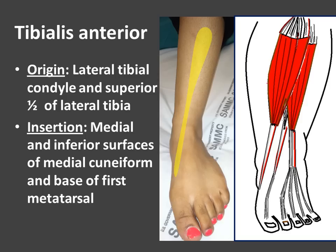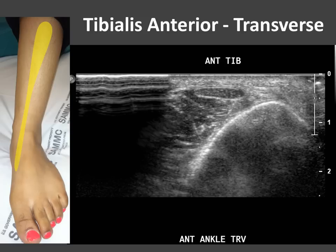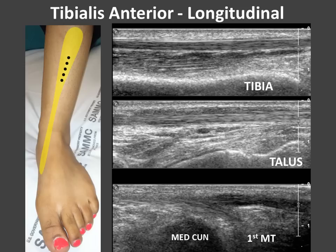Here's tibialis anterior. It originates from the lateral tibial condyle and superior half of the lateral tibia, as shown in this Netter drawing. It inserts on the medial and inferior surfaces of the medial cuneiform and base of the first metatarsal. If we place our probe in the transverse position just above the ankle, we'll see a nice hypoechoic ovoid tendon, and we can follow this structure to its insertion. In the longitudinal direction, we can see the tendon laid out nicely — here in three positions: just above the ankle at the level of the tibia, along the talus, and at its insertion on the first metatarsal.